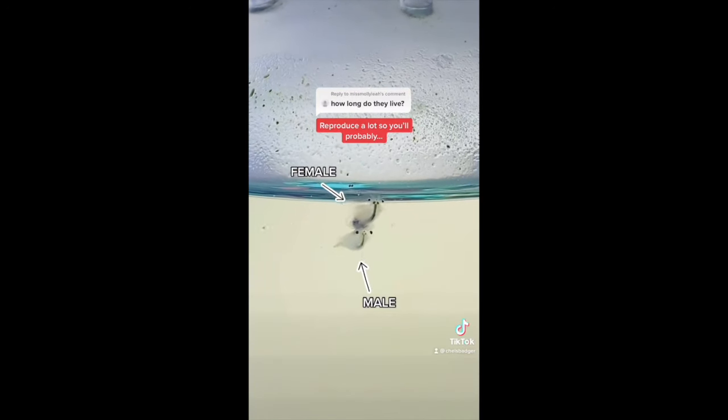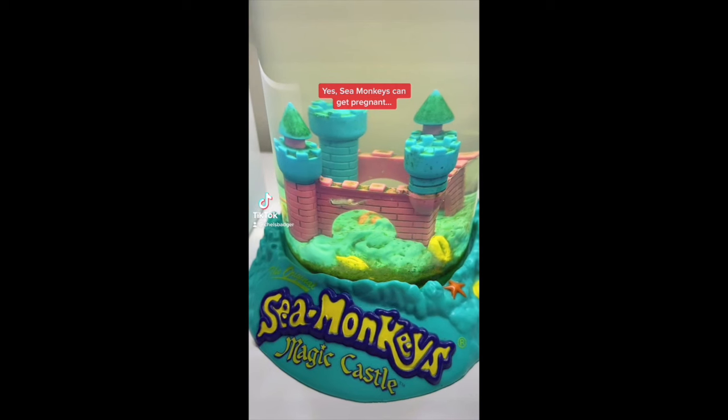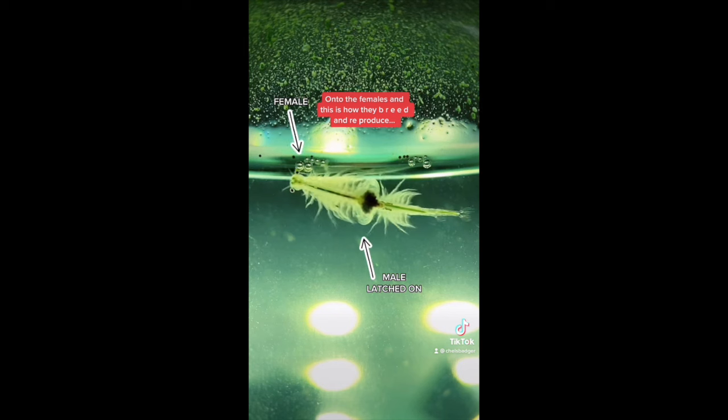If cared for correctly, sea monkeys can live up to two years. However, they reproduce a lot so you'll probably have them for a lot longer than that. Yes, sea monkeys can get pregnant. Male sea monkeys will use the clasps above their head to latch onto the females and this is how they breed and reproduce. You can tell a female sea monkey is pregnant because the egg sac on her back will be dark.